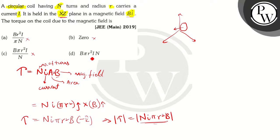Option D says B pi R square I N. As you can see this is nothing but the rearrangement of what we have got over here, so this is going to be the correct answer.